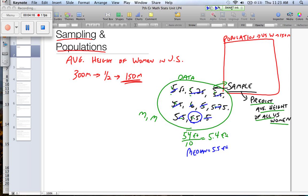Based on these results, I would predict the average height of U.S. women to be somewhere around 5½ feet, maybe 5.45 feet, if I wanted to split the difference between my median and my mean. And because I used a sample of that population, I've been able to predict the overall population's height without wasting my time measuring the height of 150 million people.